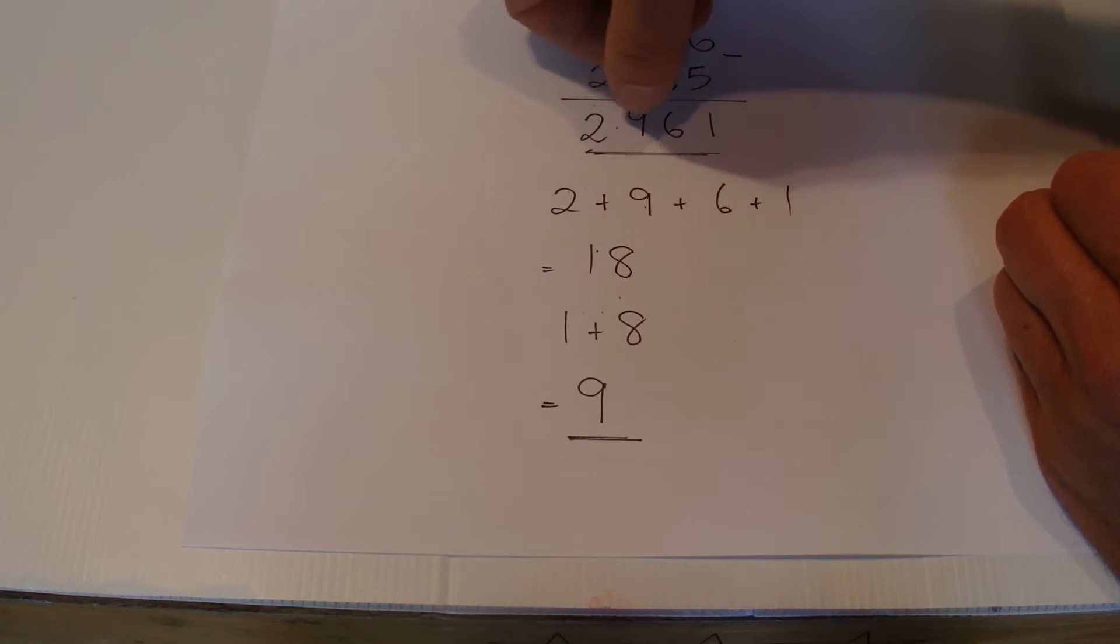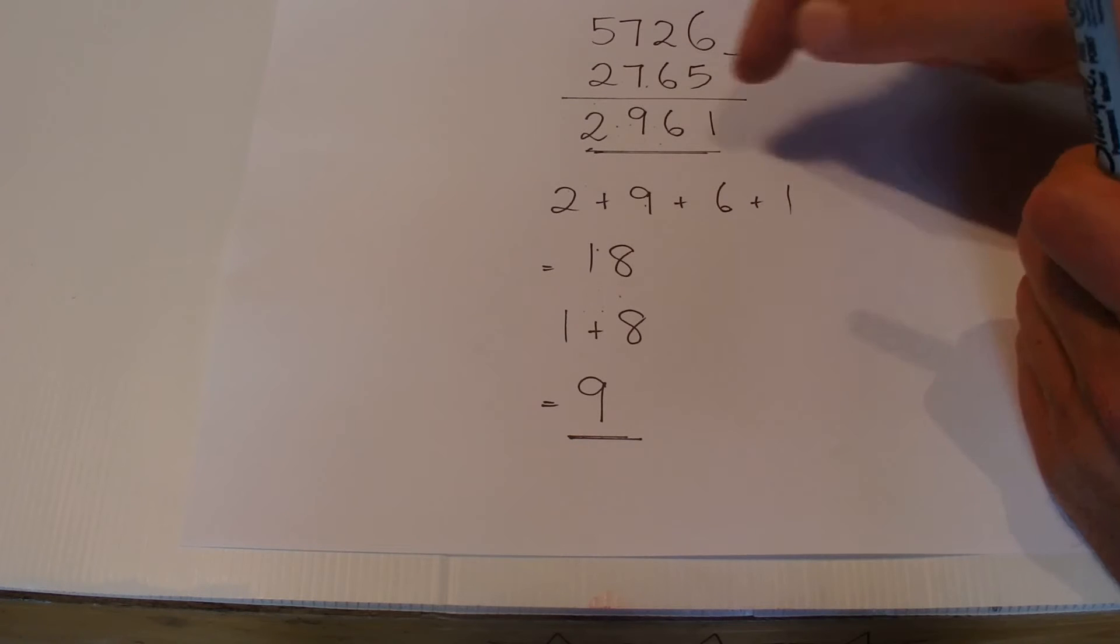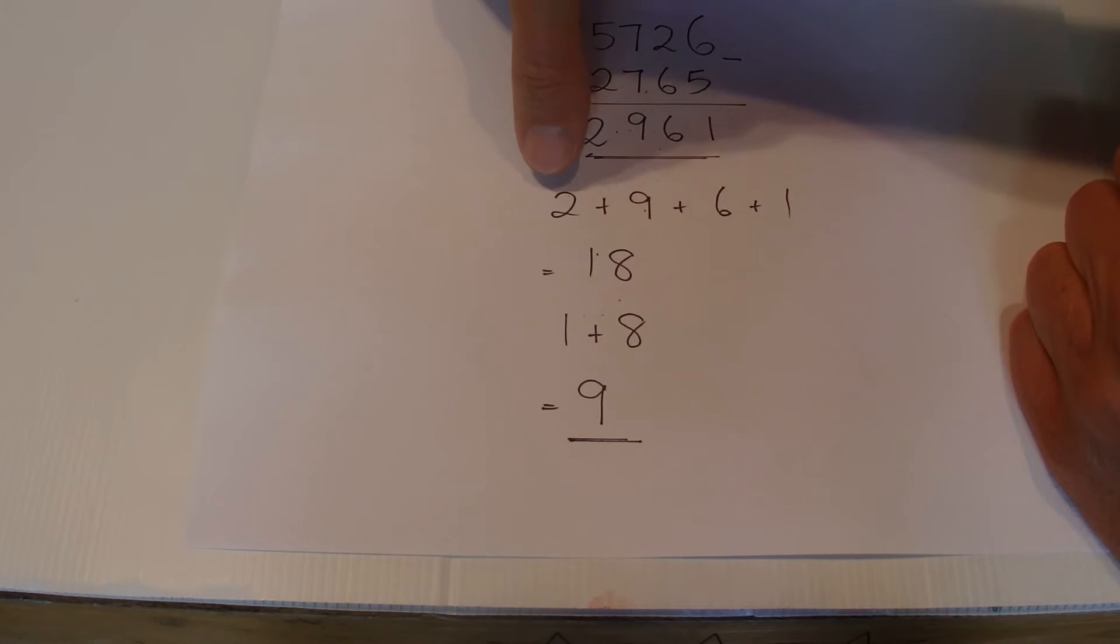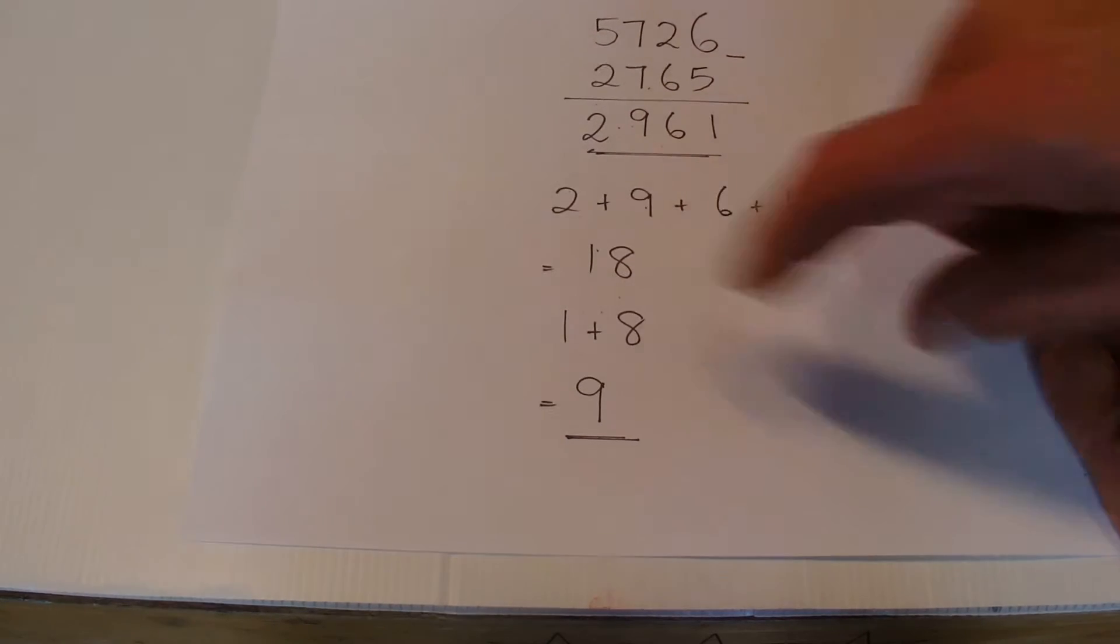The next step is to take those 4 digits that make up that 2,961 and add them together, which is 2 plus 9 plus 6 plus 1, which gives 18.